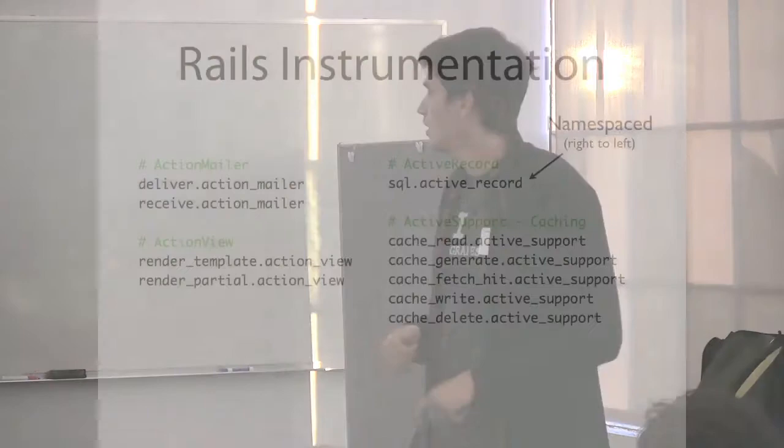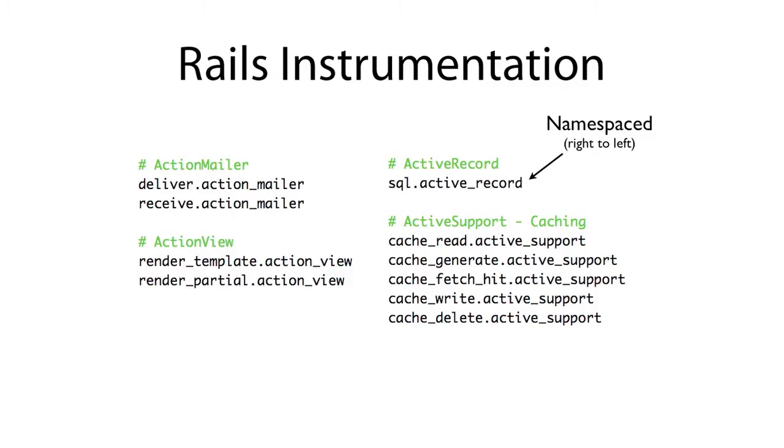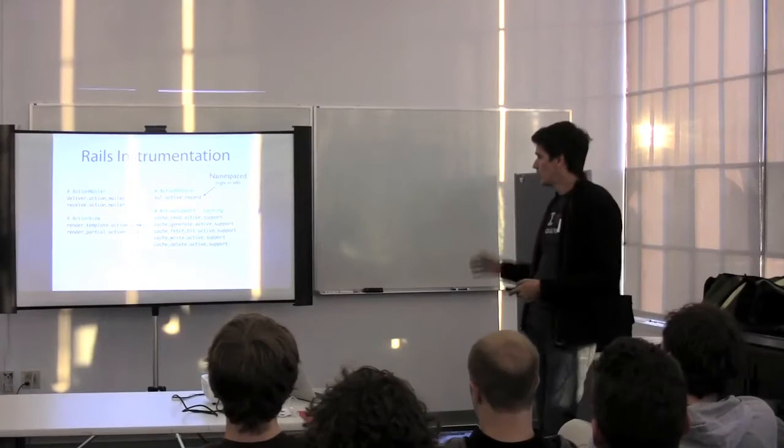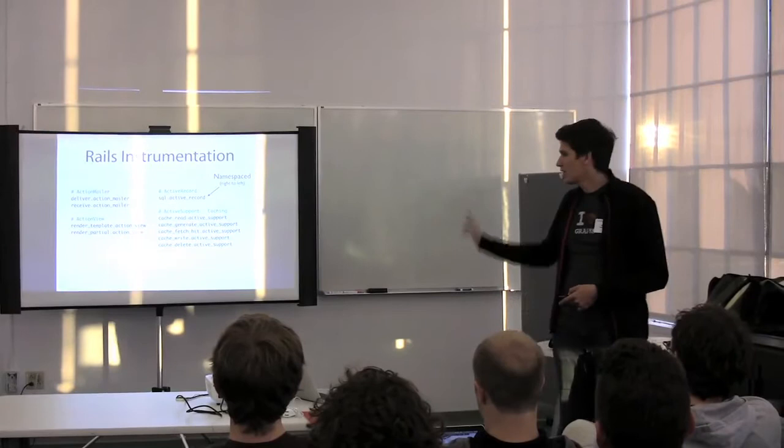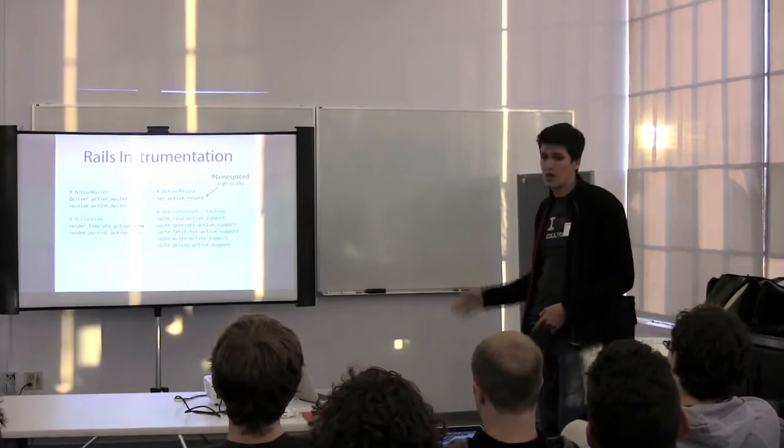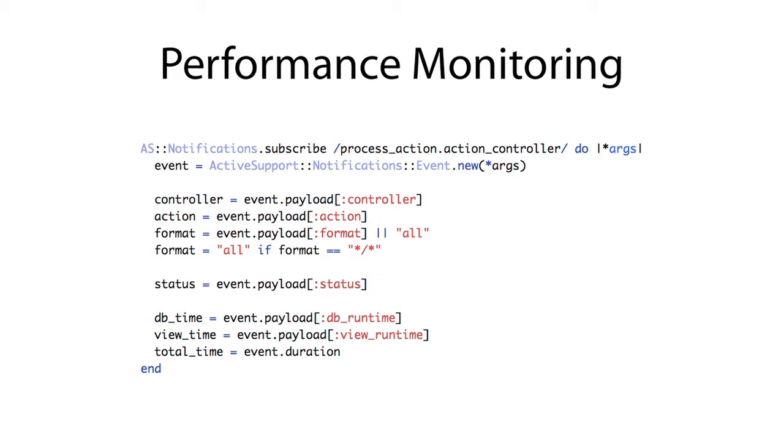One thing I want to point out: in the monitoring world it's pretty common to do a lot of dot decimal notation. With Graphite, it breaks those things down into a hierarchy. Rails is a little funky because all of their built-in events are namespaced right to left. Just keep that in mind. When you're using this for your own purposes, you can do it either way you want, but Rails events are all sequenced that way.